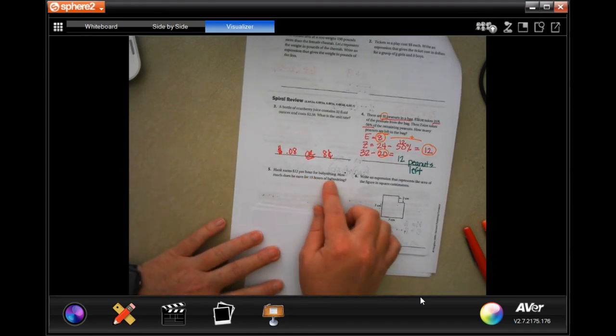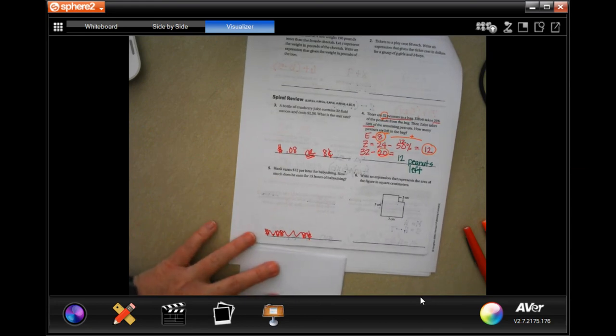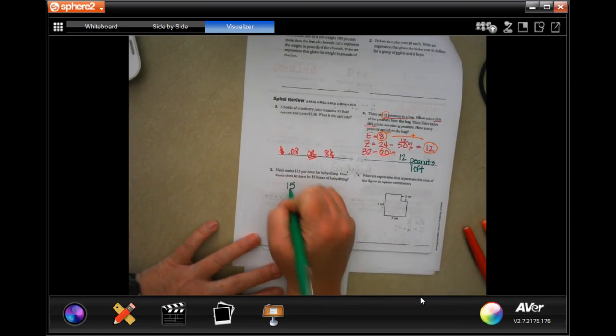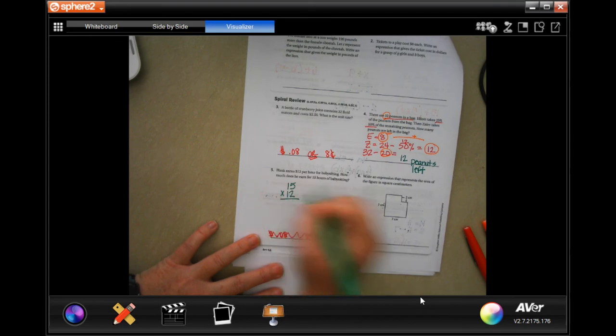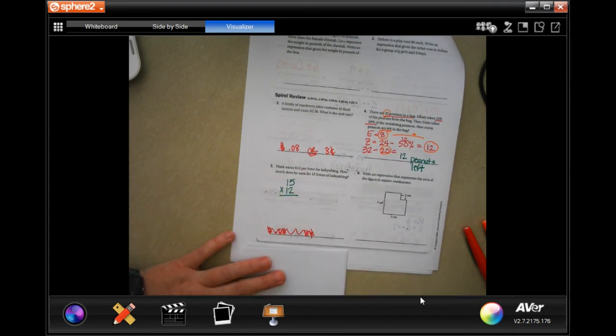Hank earns $12 per hour babysitting. How much does he earn for 15 hours? Well, let's find out. So 15 hours at $12 per hour.